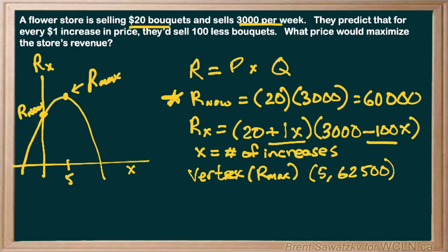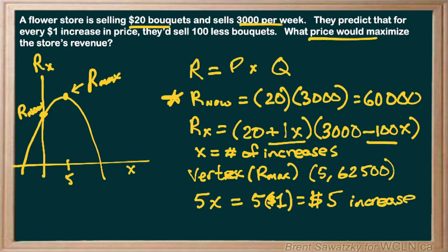And so, there we go. And so, let's go back and look what price would maximize it. Okay, so we said that the X means that there's five increases. So, 5X. And each increase was $1. So, that means a $5 increase. Now, don't go write in $5 down there. Let's stop and look at this. That's a $5 increase. So, we started off at $20. And so, our new price, the price that creates this maximum, would be $20 plus our increase, or $25.